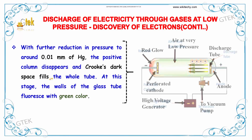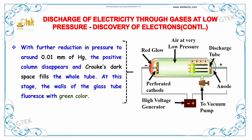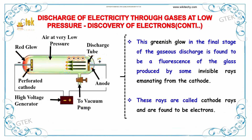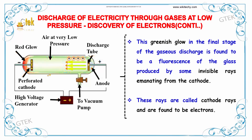With further reduction in pressure to around 0.01 mmHg, the positive column disappears and Crookes' dark space fills the whole tube. At this stage, the walls of the glass tube fluoresce with a green color. This greenish glow in the final stage of gaseous discharge is the fluorescence of the glass produced by some invisible rays emanating from the cathode. These rays are called cathode rays and are found to be electrons.